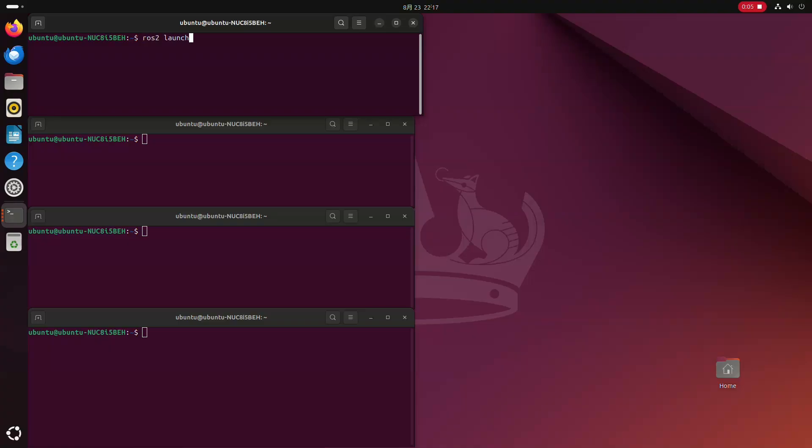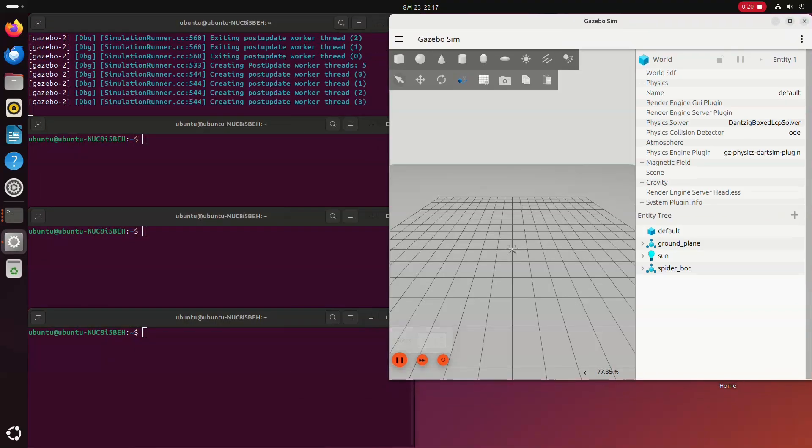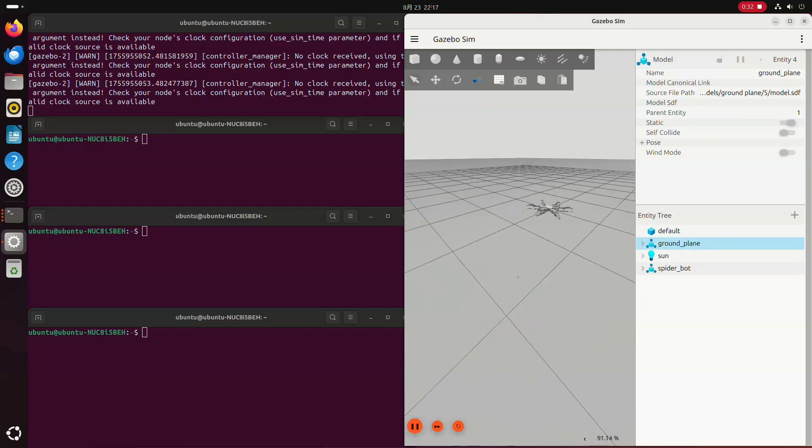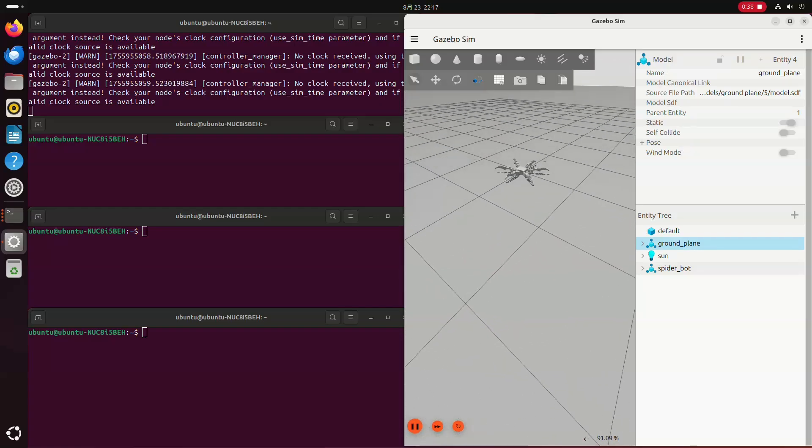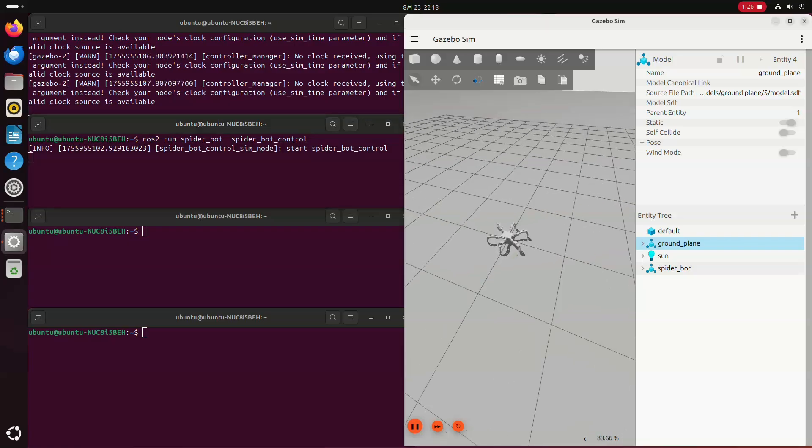First terminal here, I run ros2 launch spiderbot empty world.launch.py. Then you could see that robot is lying on the ground with all legs played at 0 degrees. On second terminal, I run ros2 run spiderbot spiderbot control. Then the robot is initialized and standing up at standby position.